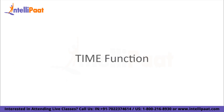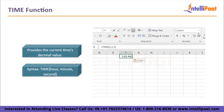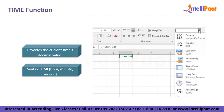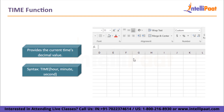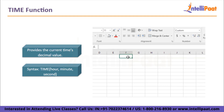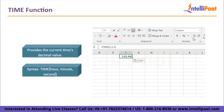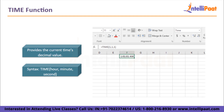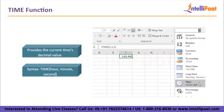Now we come to our last function, the TIME function. It provides the current time's decimal value. The result is presented as a date if the cell format was General when the function was entered. The syntax is: TIME(hour, minute, second). Hour is represented by a number between 0 and 32,767. For minute, it is also a number ranging from 0 to 32,767, and the same goes for second — the range is 0 to 32,767.